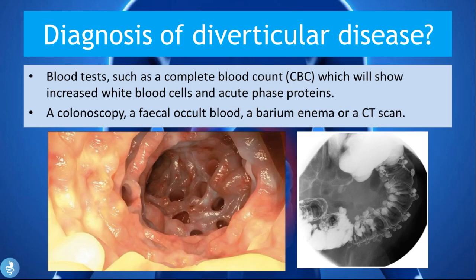For diagnosis of diverticular disease, blood tests such as a complete blood count (CBC) will show increased white blood cells and elevated acute phase proteins. High white blood cell counts indicate inflamed pouches, while elevated acute phase proteins indicate signs of inflammation in the body.